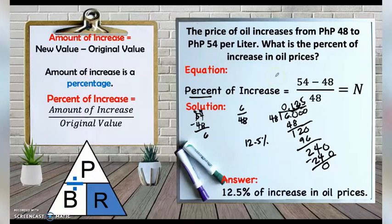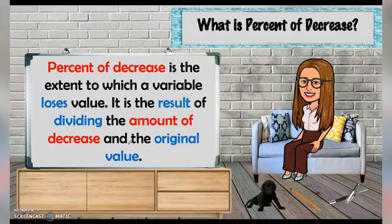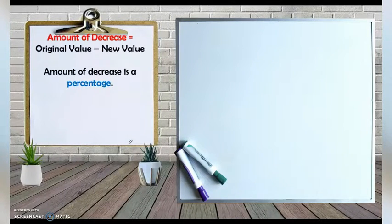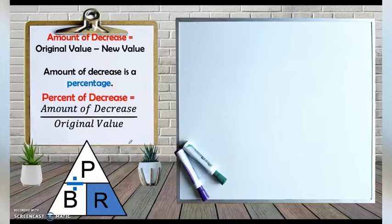If there is percent of increase, there is also percent of decrease. Percent of decrease is the extent to which a variable loses value. It is the result of dividing the amount of decrease by the original value — the opposite of percent of increase. To find the amount of decrease, subtract the new value from the original value. The amount of decrease is the percentage, and using the triangle the formula is still P divided by B.